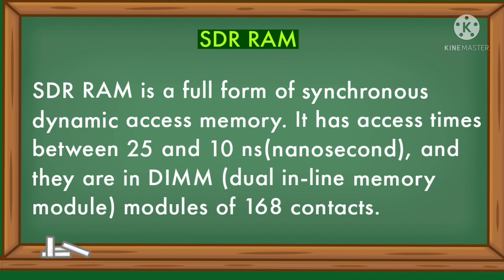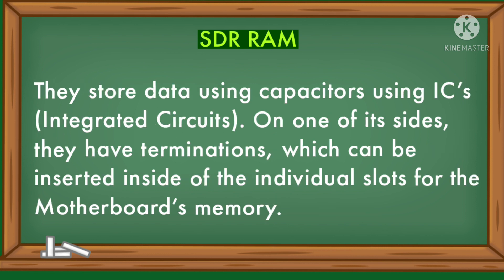SDRAM — Synchronous Dynamic Random Access Memory — has an access time between 25 and 10 nanoseconds. They come in DIMM (Dual Inline Memory Module) of 168 contacts. They store data using capacitors on ICs, and have terminations which can be inserted into individual slots on the motherboard's memory.